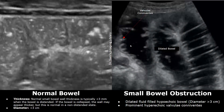This is another case of small bowel obstruction with dilated hypoechoic fluid-filled bowel. The diameter was greater than three centimeters, and you can also see prominent hyperechoic valvulae conniventes — the hyperechoic prominent intestinal folds.